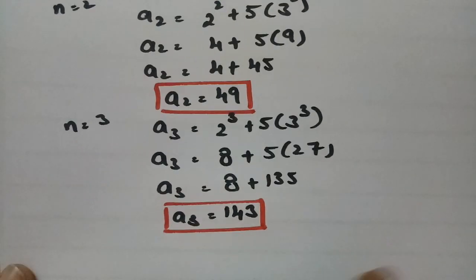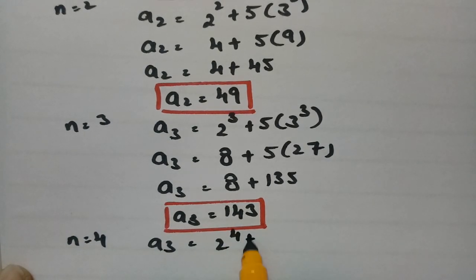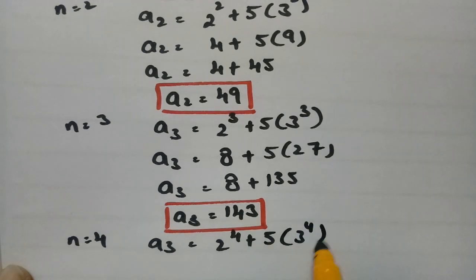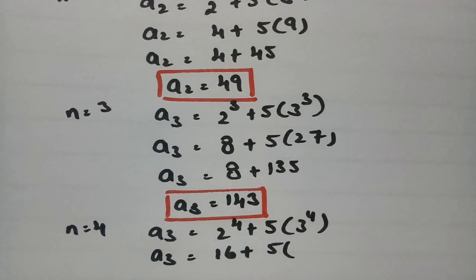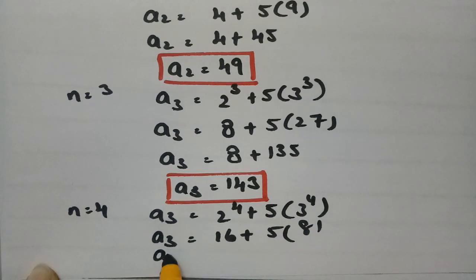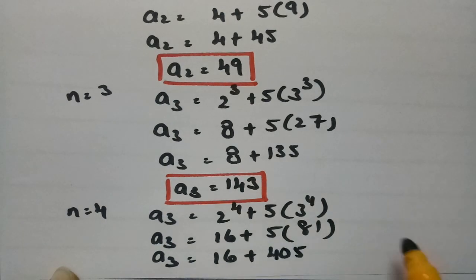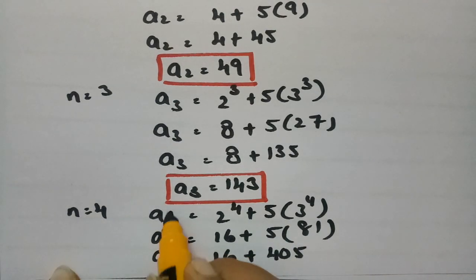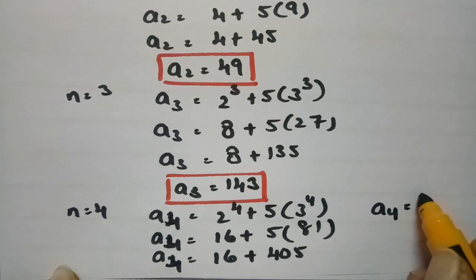For a_4, we keep n equal to 4. So a_4 equals 2^4 plus 5 times 3^4, which is 16 plus 5 times 81. Since 5 times 81 equals 405, we get 16 plus 405. So a_4 equals 421.